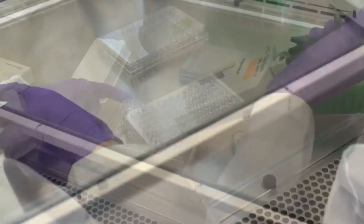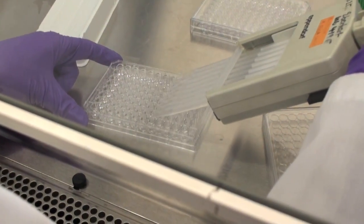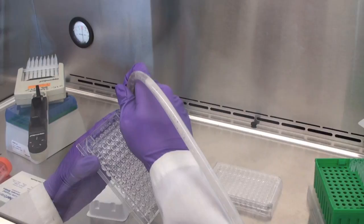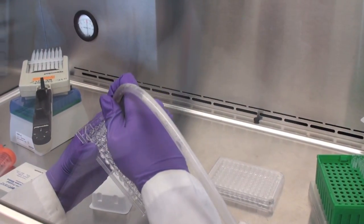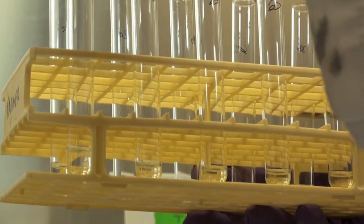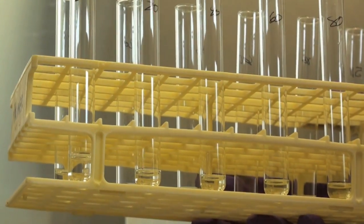In this test, Emily starts by replacing the medium in the plate containing the gill cells to make them more vulnerable to toxins that may or may not be present. She then adds the Heterosigma cells that have been subjected to the different conditions.